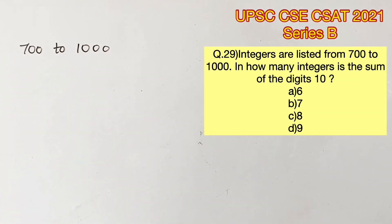Integers are listed from 700 to 1000. In how many integers is the sum of the digits 10?